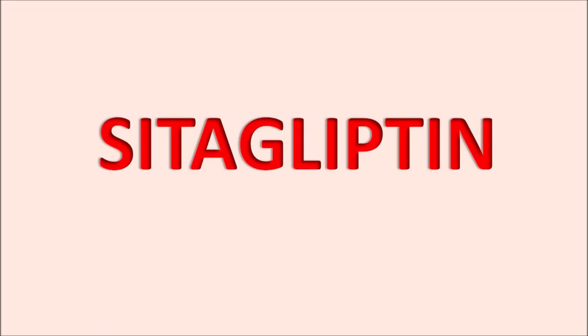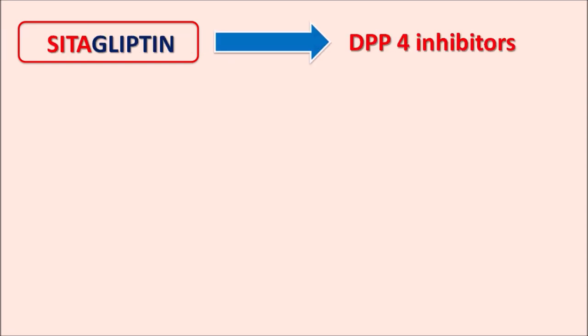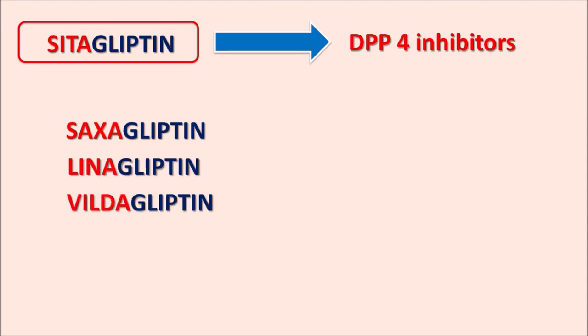Today we are going to discuss cetagliptin. The suffix '-gliptin' indicates this drug belongs to the DPP-4 inhibitors. Other drugs with a similar suffix include saxagliptin, linagliptin, and vildagliptin — all are DPP-4 inhibitors. These drugs inhibit the metabolic enzyme DPP-4, which stands for dipeptidyl peptidase 4, responsible for the cleavage of incretins that promote glucose-dependent insulin release.